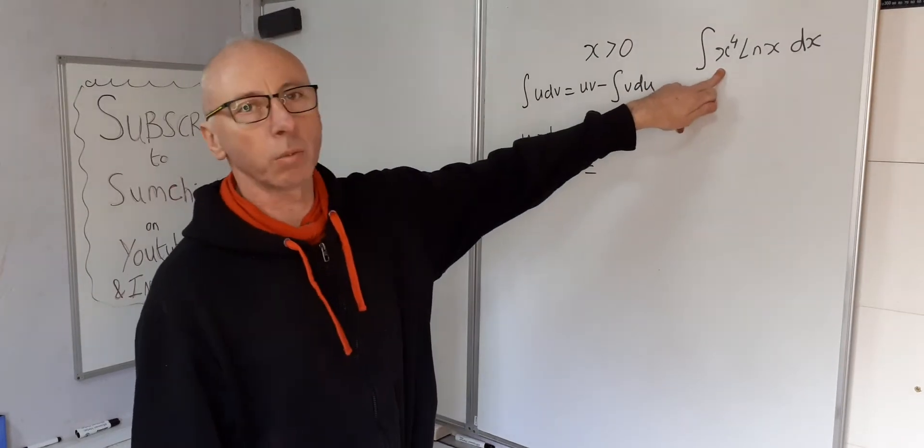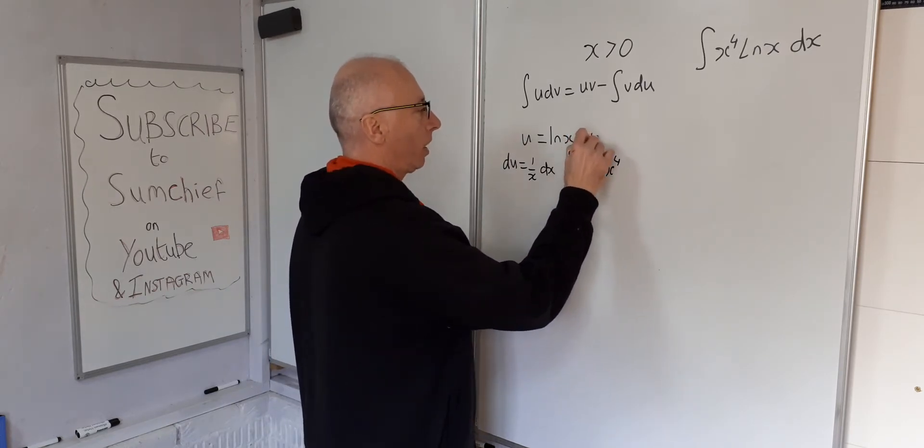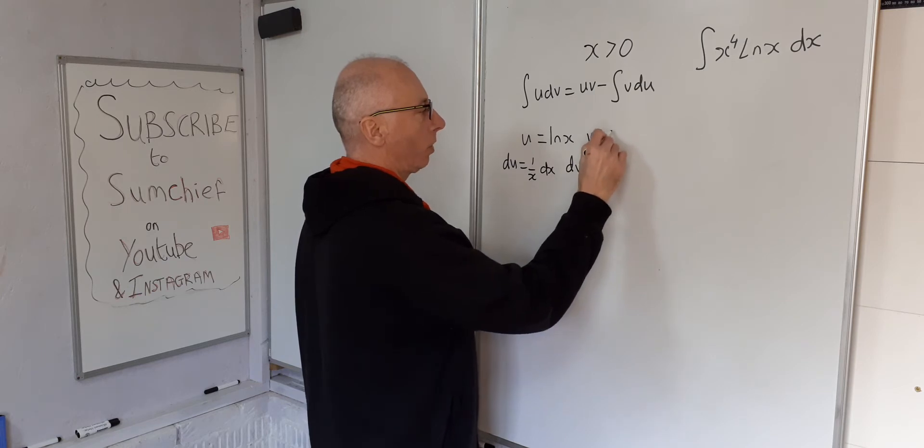So dv will assign x to the power of 4. So therefore, v equals integral of x to the 4, which is x to the 5 over 5.